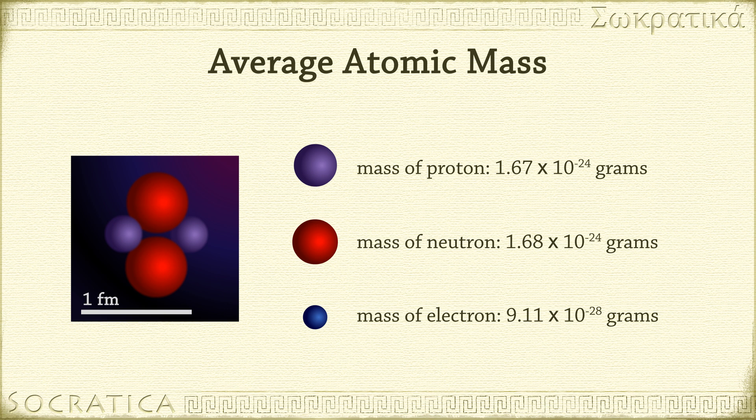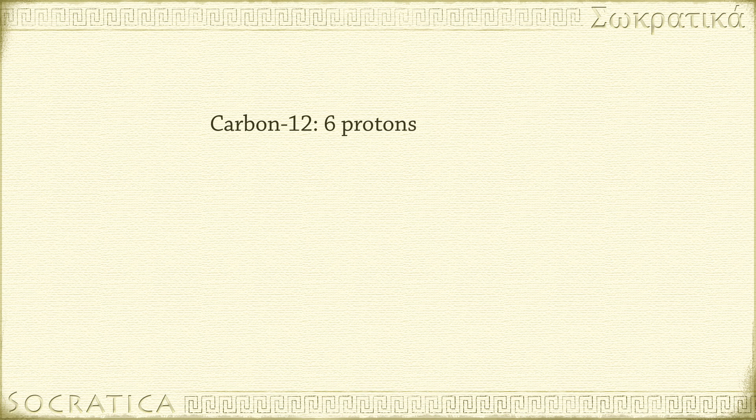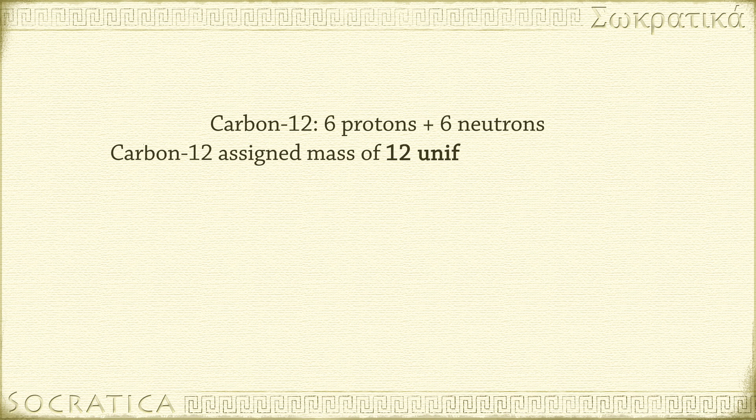so instead of using the actual mass of atoms in problems, chemists compare all atoms to one standard atom. They picked carbon-12 as the standard. Carbon-12 is the isotope of carbon with 6 protons and 6 neutrons. Carbon-12 is assigned a mass of exactly 12 Unified Atomic Mass Units, or u.